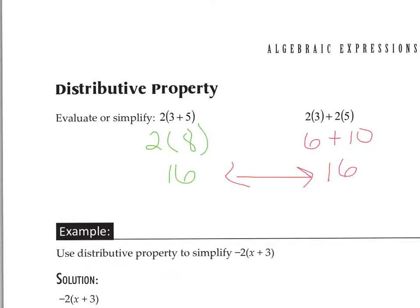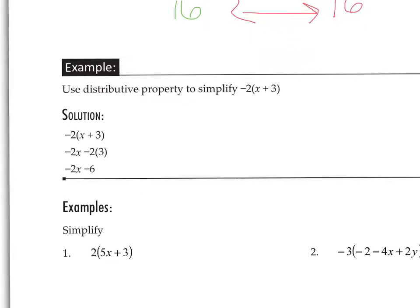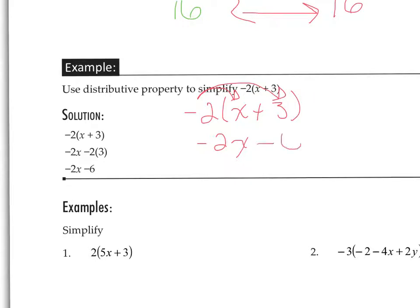The only time we really need to use distributive property is when we have variables involved. In this example, we would not be able to add x plus 3 because they're not like terms. So we would have to multiply negative 2 times x and then negative 2 times 3. Negative 2 times x is negative 2x. Negative 2 times 3 is negative 6. So this expression becomes negative 2x minus 6.